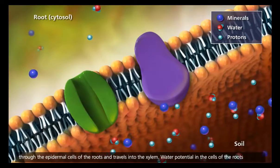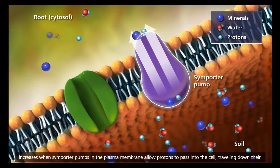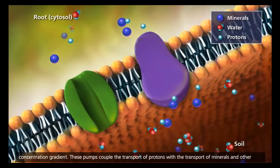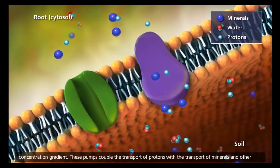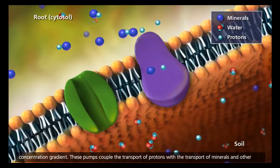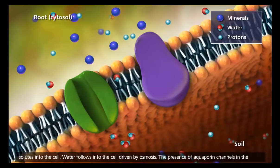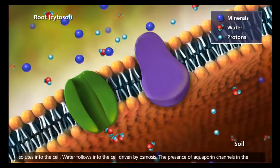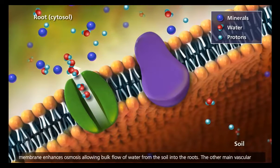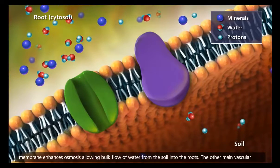Water potential in the cells of the roots increases when symporter pumps in the plasma membrane allow protons to pass into the cell, traveling down their concentration gradient. These pumps couple the transport of protons with the transport of minerals and other solutes into the cell. Water follows into the cell, driven by osmosis. The presence of aquaporin channels in the membrane enhances osmosis, allowing bulk flow of water from the soil into the roots.